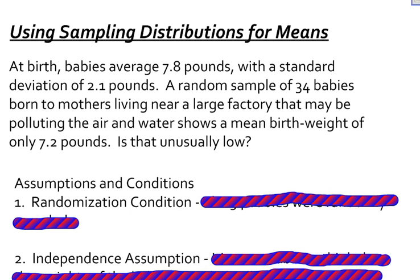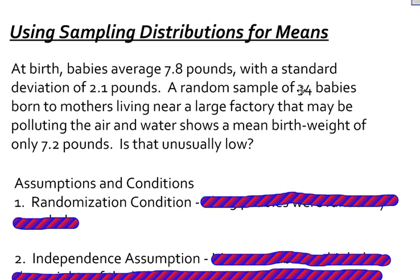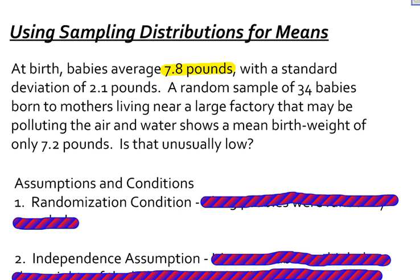Let's go ahead and look at the example that I want to use, and then we'll go through the process and the things that you have to look at before you actually start doing some of the math. It says: at birth, babies average 7.8 pounds with a standard deviation of 2.1 pounds. I want to make a note that these are parameters — this is supposed to be true for the population of all babies.